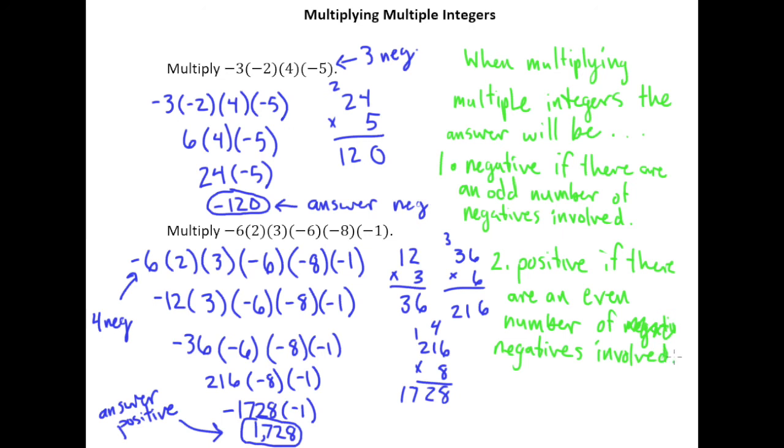And so just to understand why this is, every time you have a pair of negatives that you multiply together, you can think of them as zapping each other out. So in this example here, this negative and this negative zap each other out to make a positive. This negative and this negative zap each other out to make a positive. And so if you think of it in that sense, those two pairs have zapped each other out. And so now there's no negatives left.